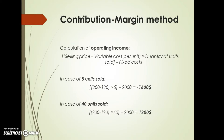Using the contribution margin method, Emma begins by identifying which costs are fixed and which costs are variable, and then calculates the contribution margin. The booth rental cost of $2,000 is a fixed cost because it will not change no matter how many packages Emma sells. The cost of the package itself is a variable cost because it increases in proportion to the number of packages sold.